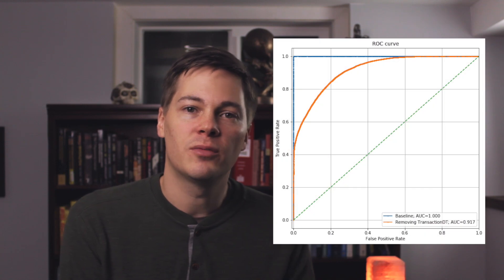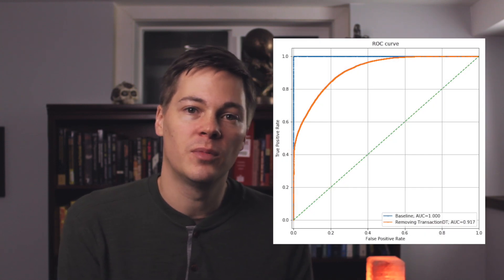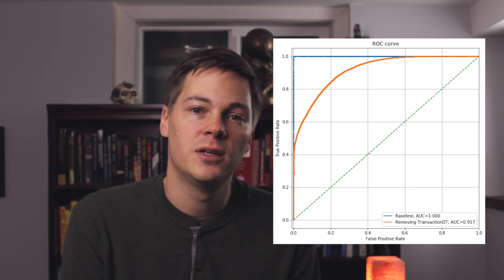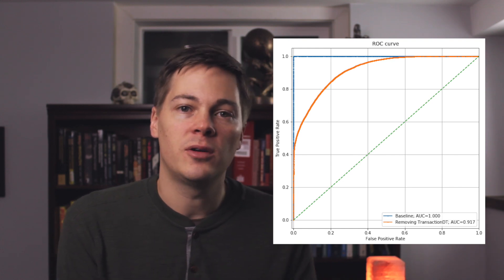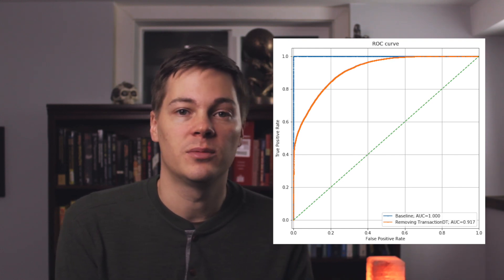Let's remove transaction date and rerun the process to see what we get. Now we see the ROC AUC decreased from 1 to 0.917 — still a pretty strong model, but a substantial decrease in performance. Now the top feature is ID 31, and if you look at the values of ID 31, you'll see that it has particular software versions in it. It doesn't take too much thought to realize this is sort of like including a raw date, because you won't observe particular versions of software until after their release date.